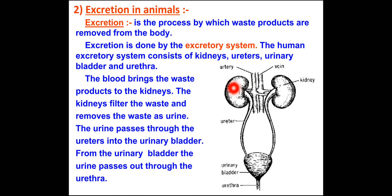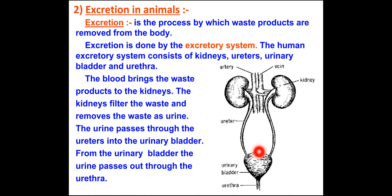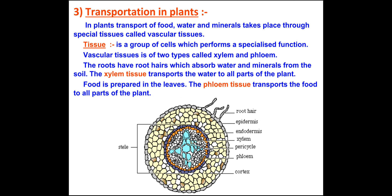The kidney filters the waste and removes it as urine. This urine passes through the ureter. From the ureter, urine passes towards the urinary bladder — a sac-like structure — where urine gets stored. When the bladder gets full, urine passes out through the urethra. That is the excretory system in the human being.